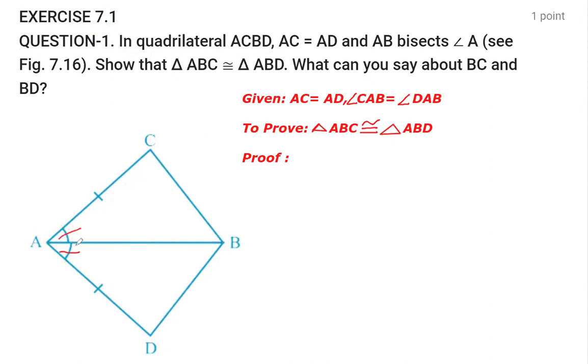We have to prove these two triangles congruent. What we need to prove is that triangle ABC is congruent to triangle ABD.